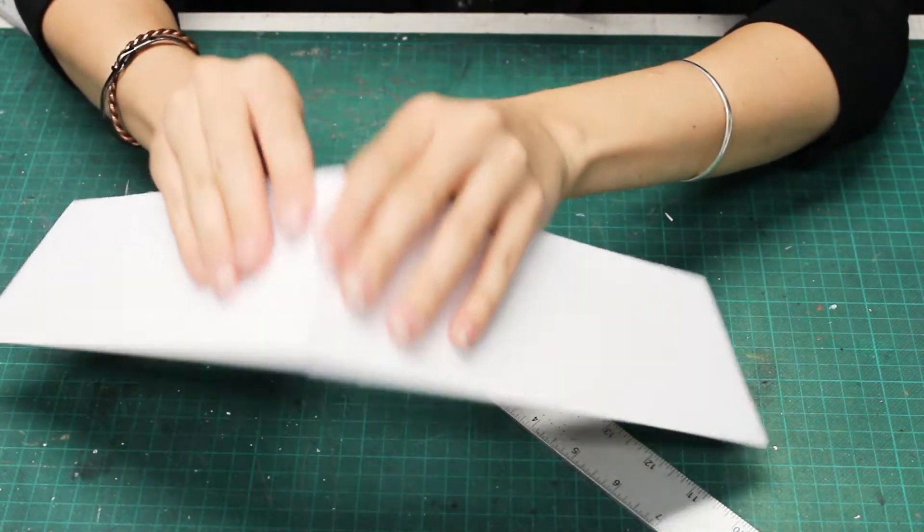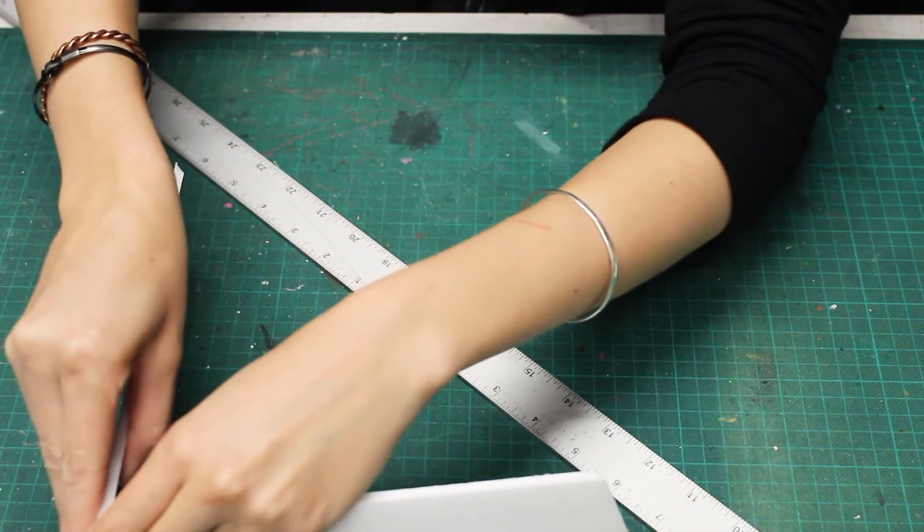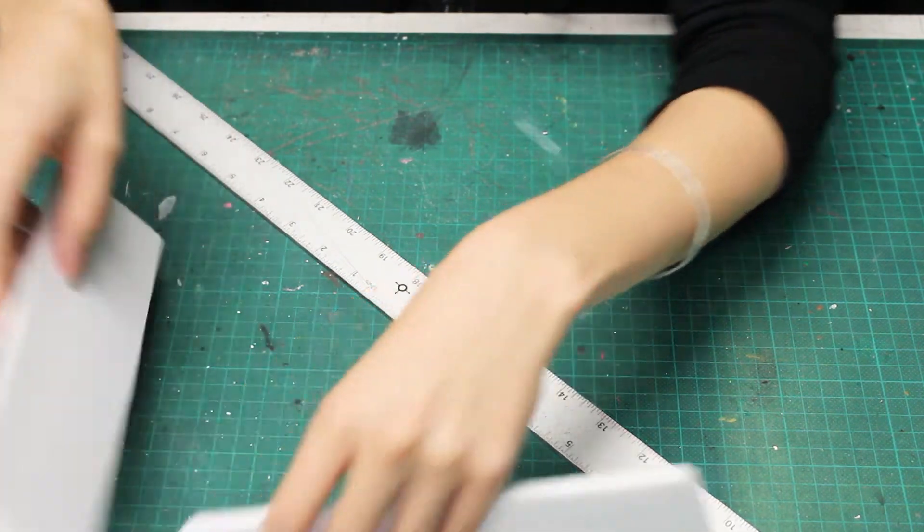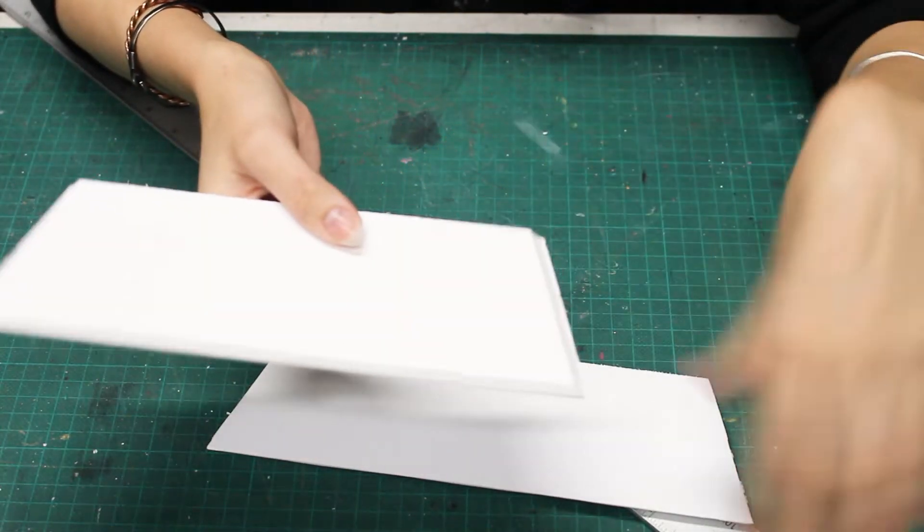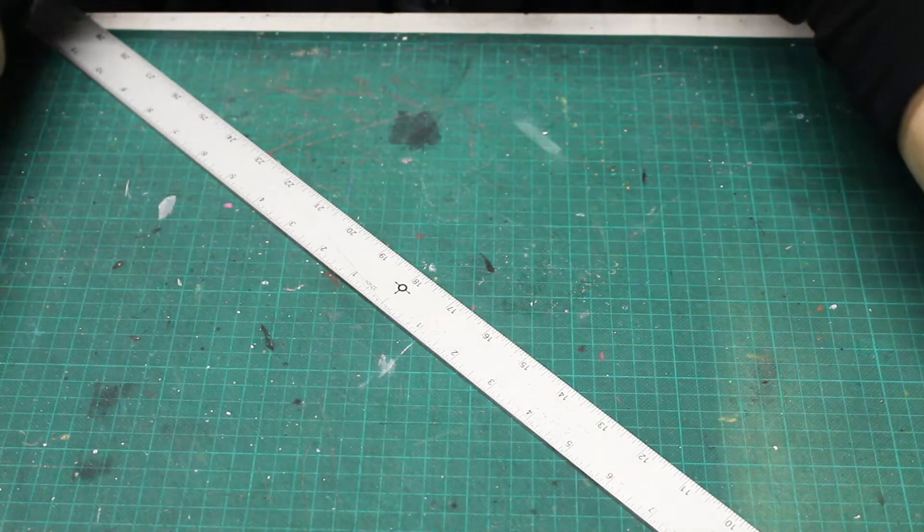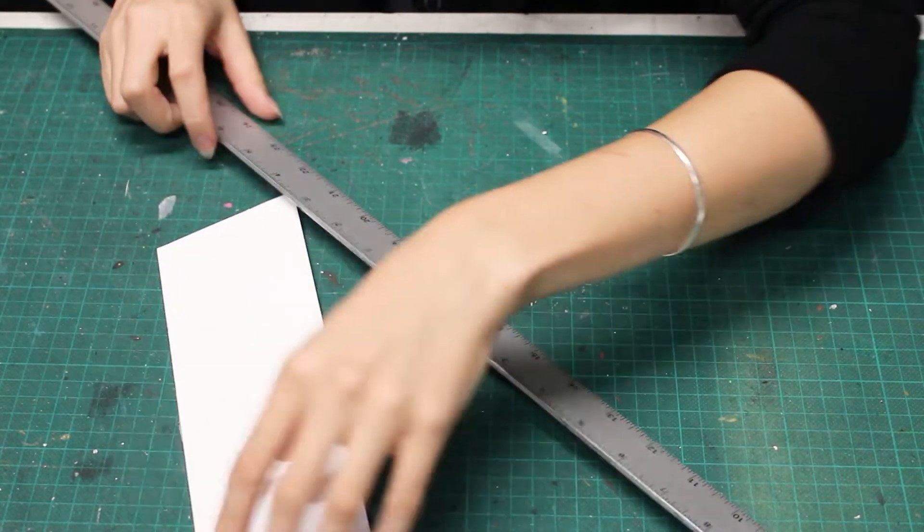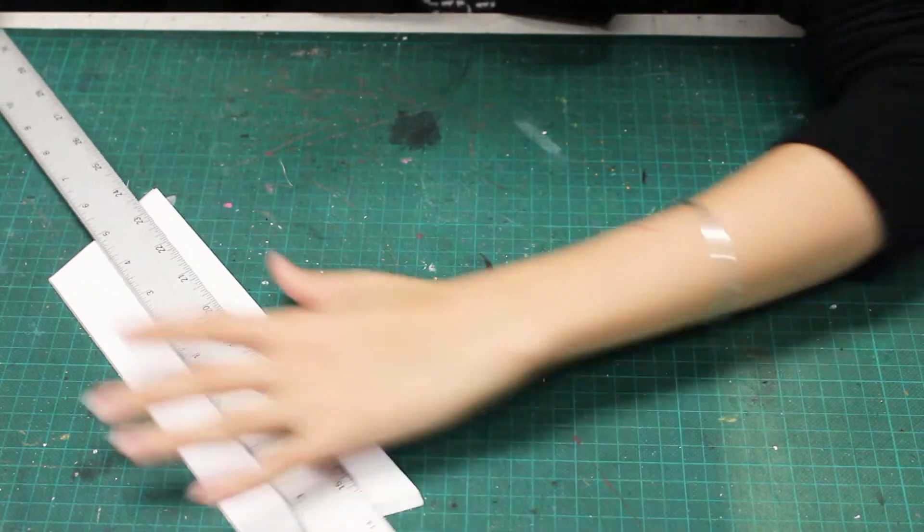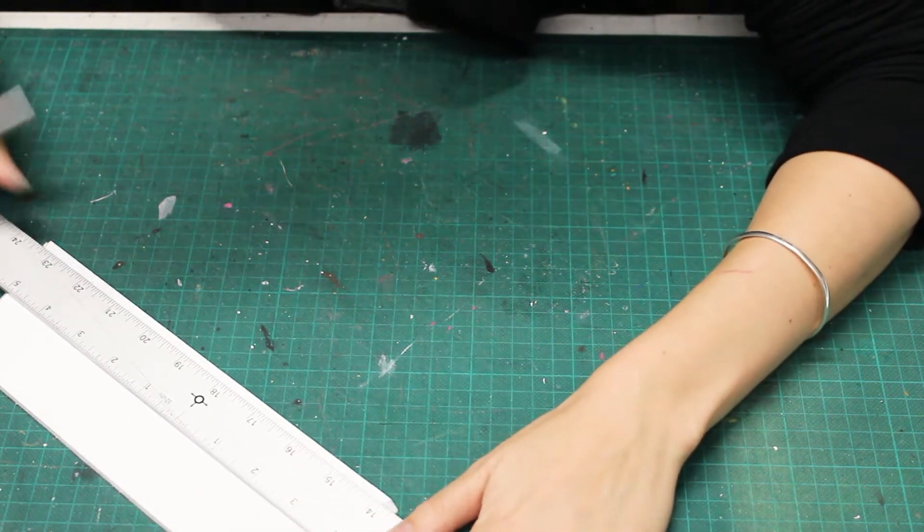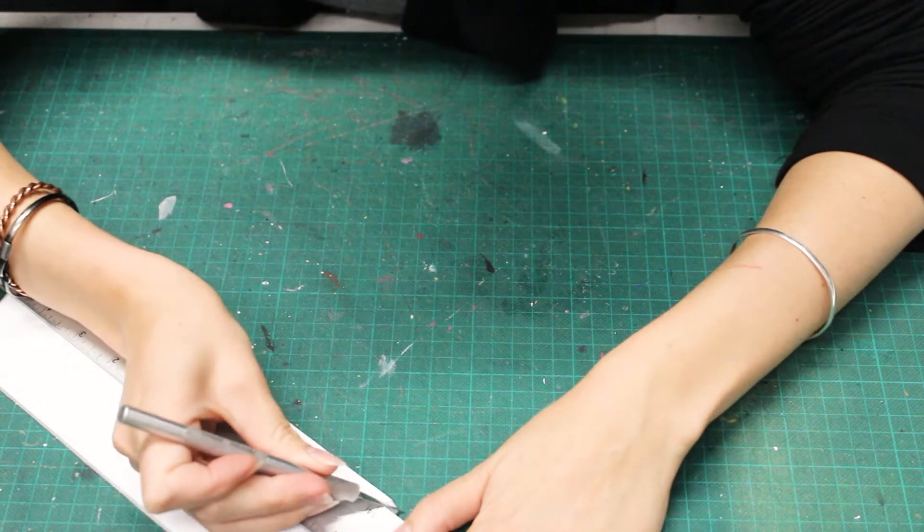Because these pieces will touch the table at an angle, we're going to need to bevel the bottom edge as well. I don't need to take quite as much off as I did before, so I will position my ruler a little closer to the edge.